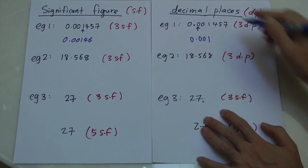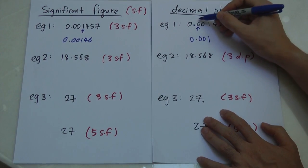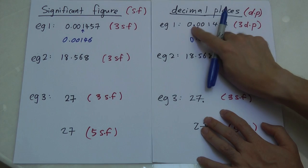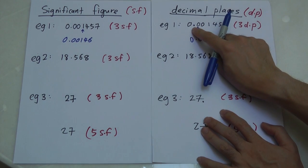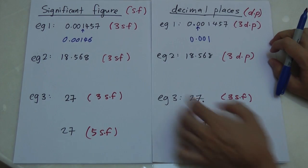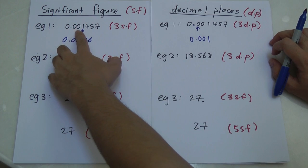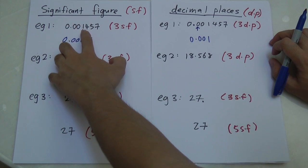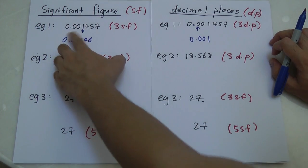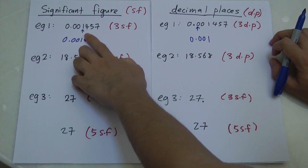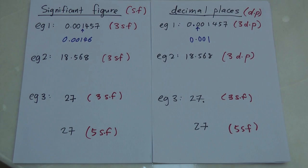So you can see the difference: for decimal place we start counting from the first digit after the dot, but for significant figures we start counting from the first non-zero digit after all the leading zeros.